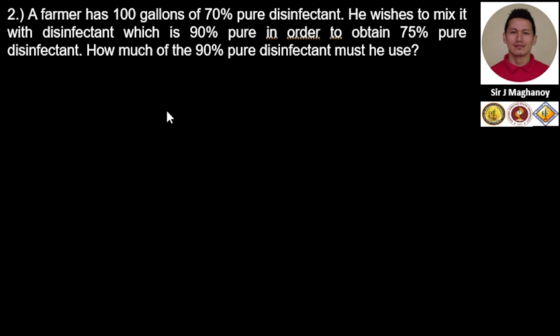Supplement number two. A farmer has 100 gallons of 70% pure disinfectant. He wishes to mix it with disinfectant which is 90% pure in order to obtain 75% pure disinfectant. How much of the 90% pure disinfectant must he use?